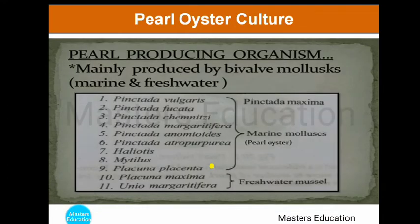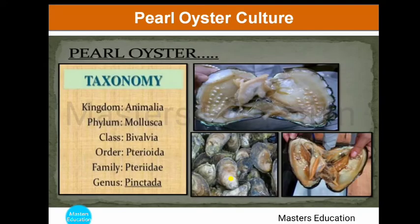The organisms which produce pearls generally belong to bivalve molluscs, and they may be marine as well as freshwater. Pearl oyster belongs to the genus Pinctada. Apart from Pinctada, a large number of other marine and freshwater molluscs also produce pearl or pearl-like concentrations. However, Pinctada produces gem-quality pearls. There are some 70 pearl-producing molluscan species, out of which 28 species belong to the genus Pinctada.